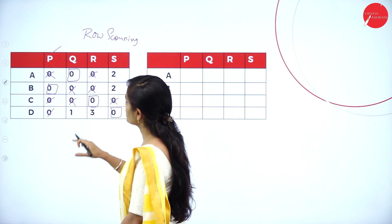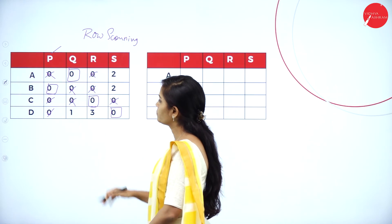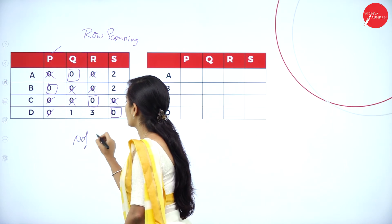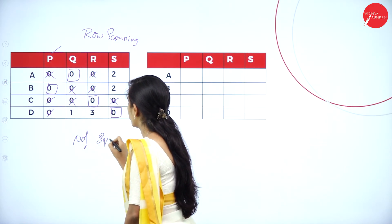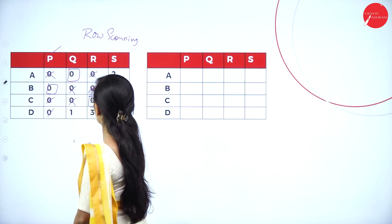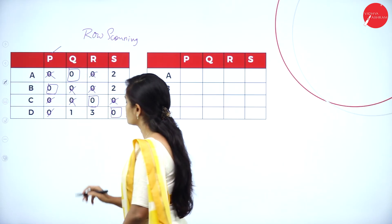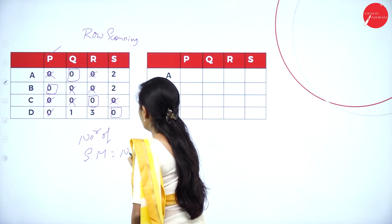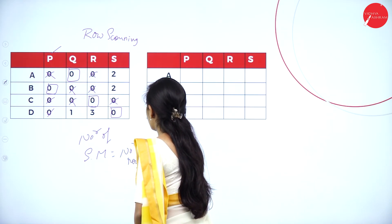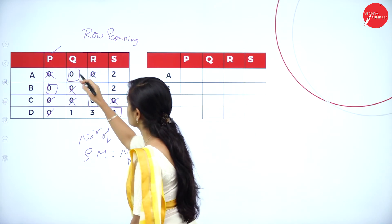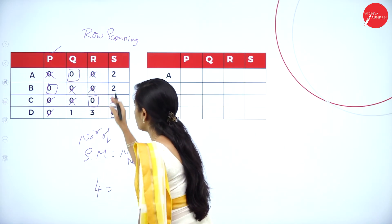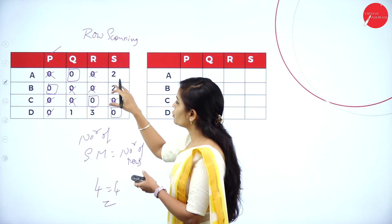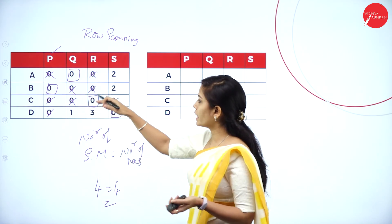Now verify: the number of square-marked zeros should equal the number of rows. Count: 1, 2, 3, 4 — four zeros assigned. Number of rows is also 4. So 4 equals 4, it is a square matrix. This is your first solution.